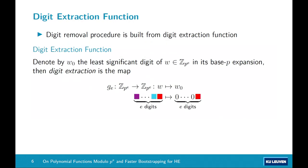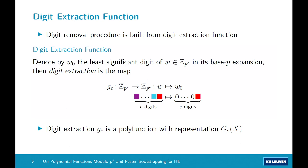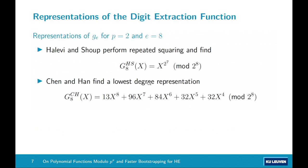The digit removal procedure inside bootstrapping is built from a very simple function called the digit extraction function, written as g_e. Digit extraction takes as input an e-digit number and outputs an e-digit number where the least significant digit is the same as the input and all other digits are zero — so it really extracts the least significant digit. It has already been shown that digit extraction is a polyfunction, and there exist ad hoc methods to obtain representations. For example, for p=2 and e=8, Halevy and Shoup perform repeated squaring and find a representation of degree 2^7.